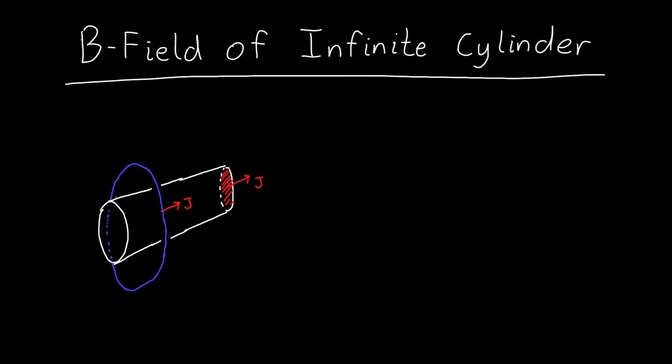In this video, we're going to learn how to find the magnetic field of an infinite cylinder which is carrying a current density j. To set up this problem, the cylinder's carrying a current density j and has a radius of a, and we're interested in finding the magnetic field at a distance r away from the center of the cylinder.